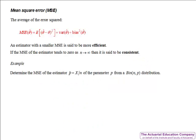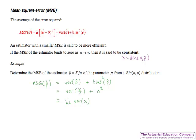Finally, let's find the mean square error of the estimator p hat equal to x over n from a Binomial(n, p). The MSE of p hat equals the variance of p hat plus the bias of p hat squared. We showed the bias of p hat was zero, so it equals the variance of x over n. Since n is a constant we take it outside and square it. Since x has a Binomial(n, p) distribution, the variance of x is npq. Substituting gives 1 over n squared times npq, which equals pq over n. Again, as n is larger the estimator becomes more efficient, and as it tends towards zero it is a consistent estimator.